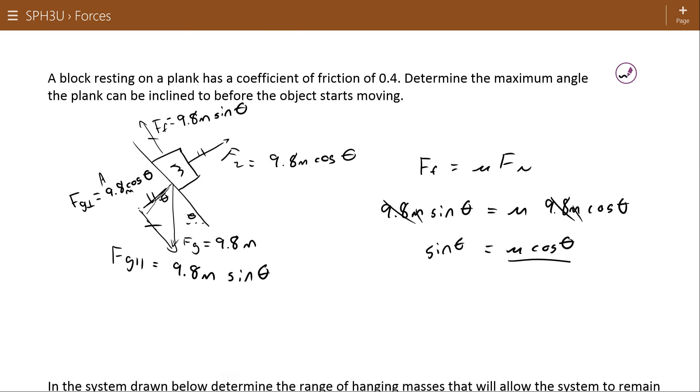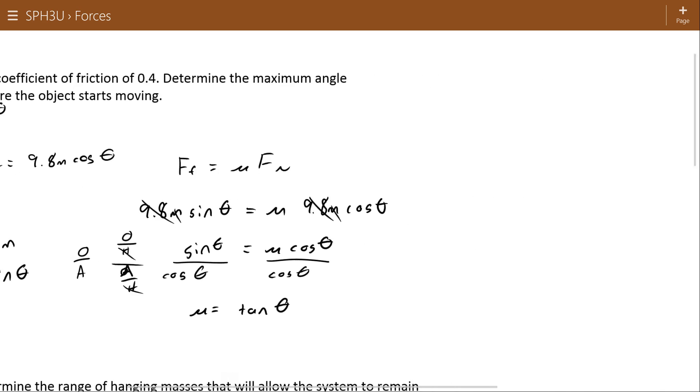If I divide both sides by cos theta, then I get μ equals tan theta. Recognizing that sin over cos is tan. If you haven't done that in math yet, remember sin is opposite over hypotenuse, and cos is adjacent over hypotenuse. So if we simplify those two ratios, it's opposite over adjacent, the two hypotenuses canceling out, which is tan.